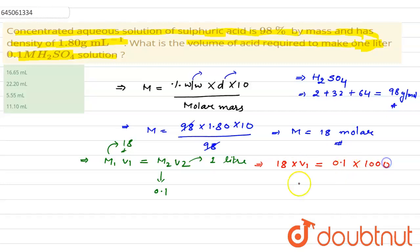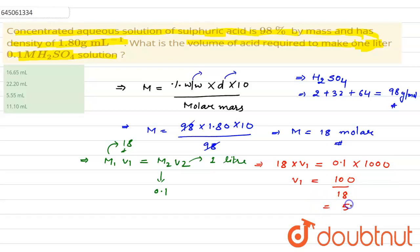V2 is 1000 mL, so V1 would be 100 divided by 18, giving an answer of 5.55 mL. This is the volume required. So our answer would be the third option. This is our correct answer.